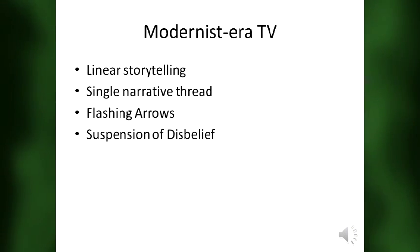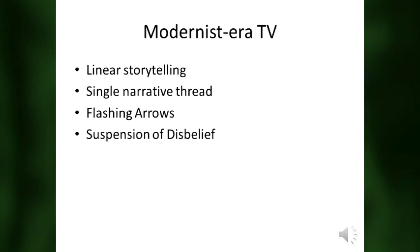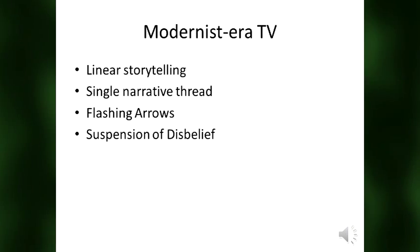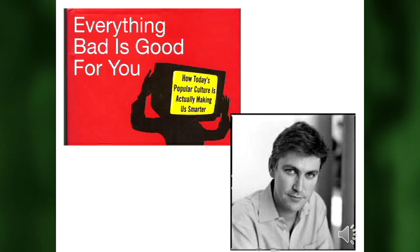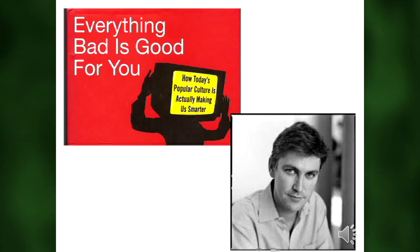They had to work very hard to develop the complex language that we today take for granted. We grew up with a visual film and TV vocabulary. One of the other things you see about early modernist television is suspension of disbelief. So let's actually diagram some narratives and see what we get, just like Johnson does in the book.